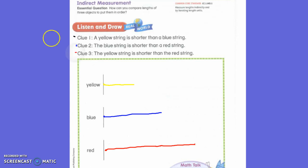Let's read clue number 3 to make sure that we're doing it correctly. Let's read together. The yellow string is shorter than the red string. Is that true? Yes, it is. The yellow string is already shorter than the red string. So have we drawn that correctly? Yes.